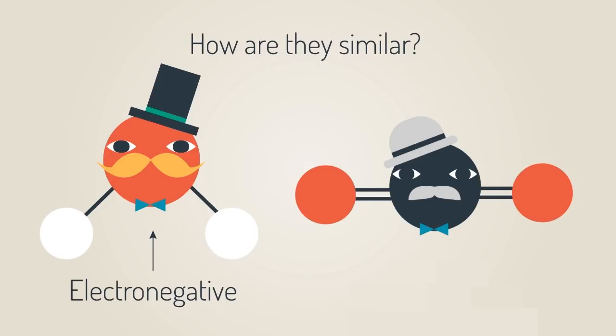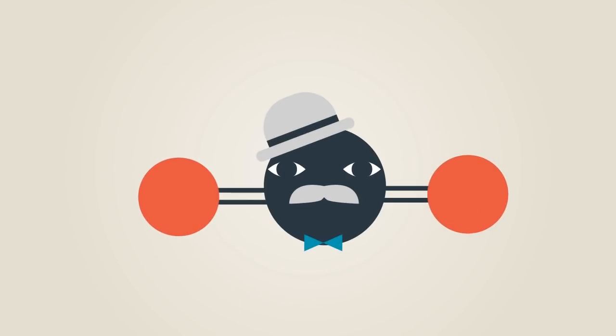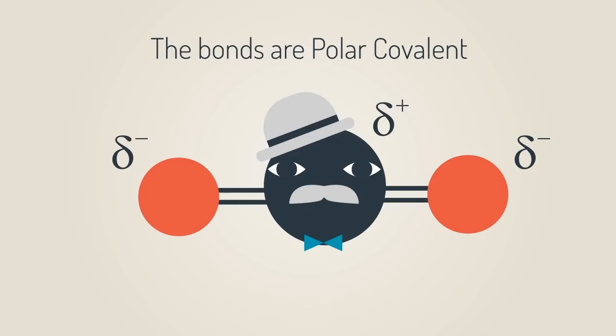The answer is that like water, the bonds are polar covalent, making the carbon atom delta positive and the oxygens delta negative. Although unlike water, carbon dioxide is not a polar molecule overall. Its linear geometry means that the two polar bonds effectively cancel each other out.